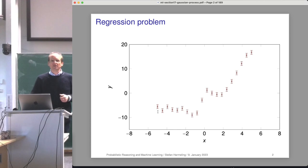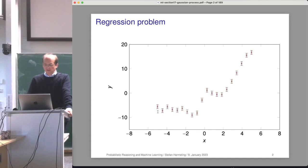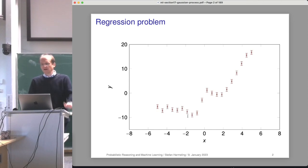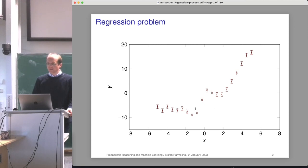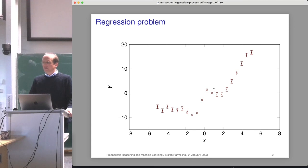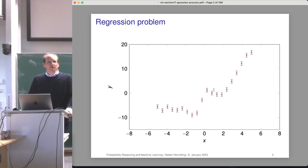For Bayesian inference it's often essential that you know the noise, or at least assume there is some. If you assume there is no noise, the true function must go exactly through all points, which might not be a good idea. Some wiggles are just due to noise, while others look like real structure in the data. If you know the noise variance, you can plug it into the mathematics rather than just minimizing least squares.